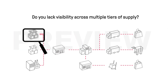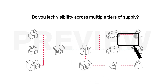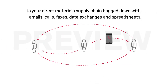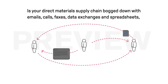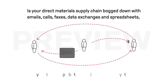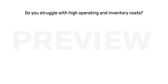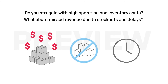Do you lack visibility across multiple tiers of supply? Is your direct materials supply chain bogged down with emails, calls, faxes, data exchanges and spreadsheets trying to fill gaps between disconnected systems? Do you struggle with high operating and inventory costs? What about missed revenue due to stockouts and delays?